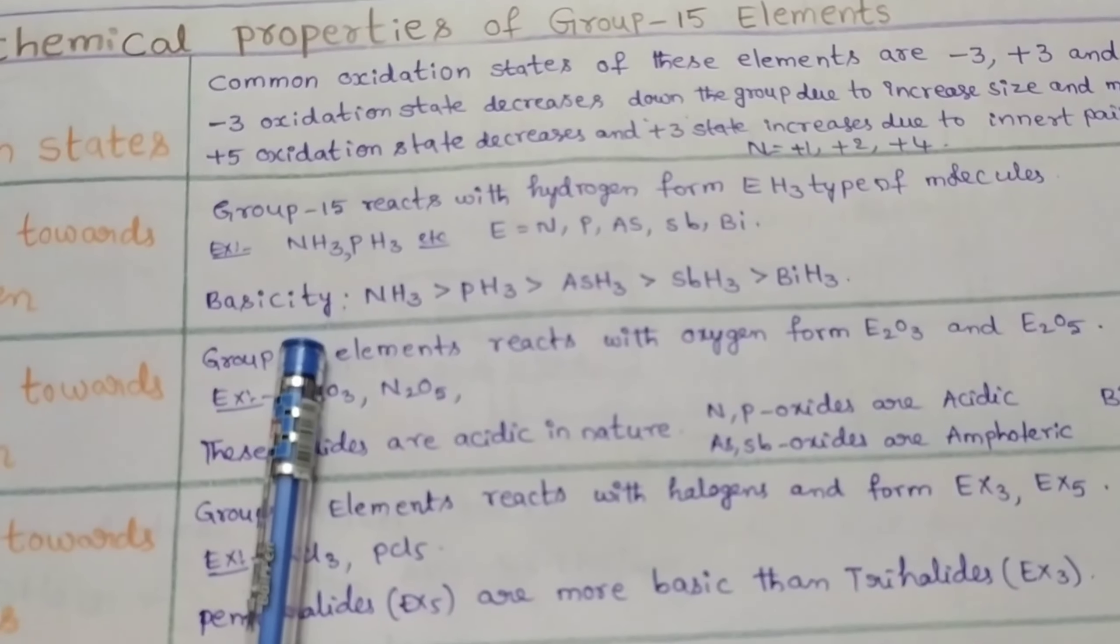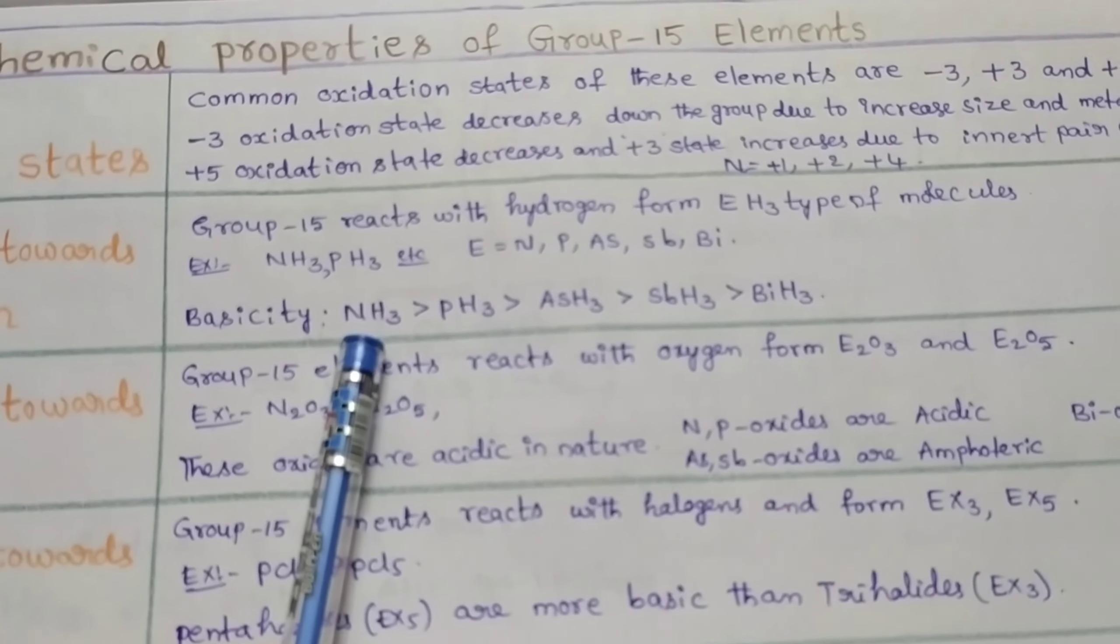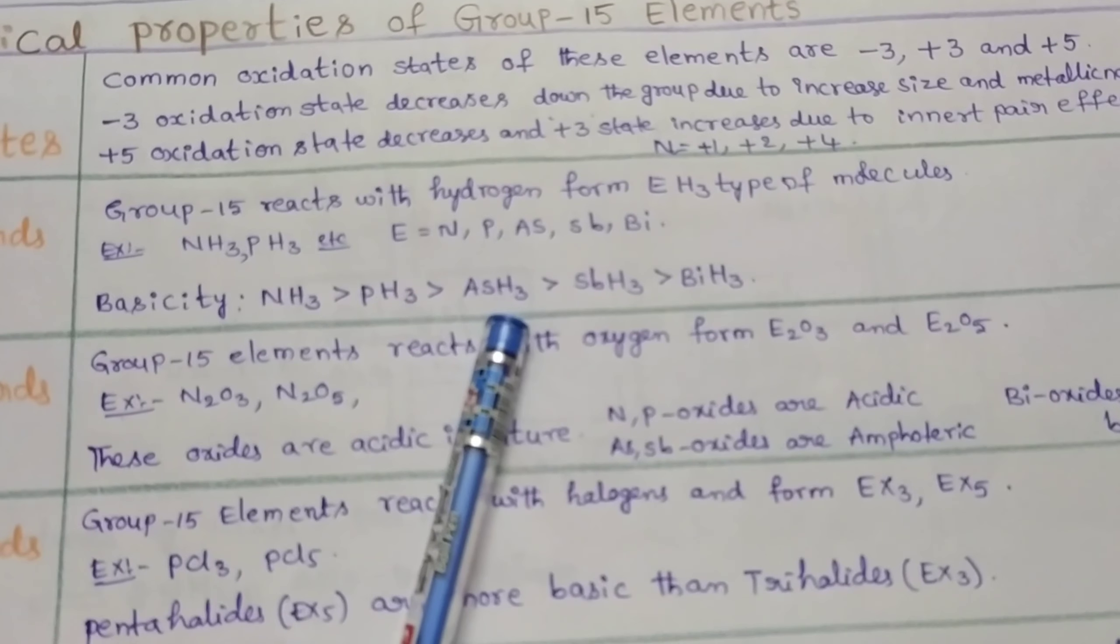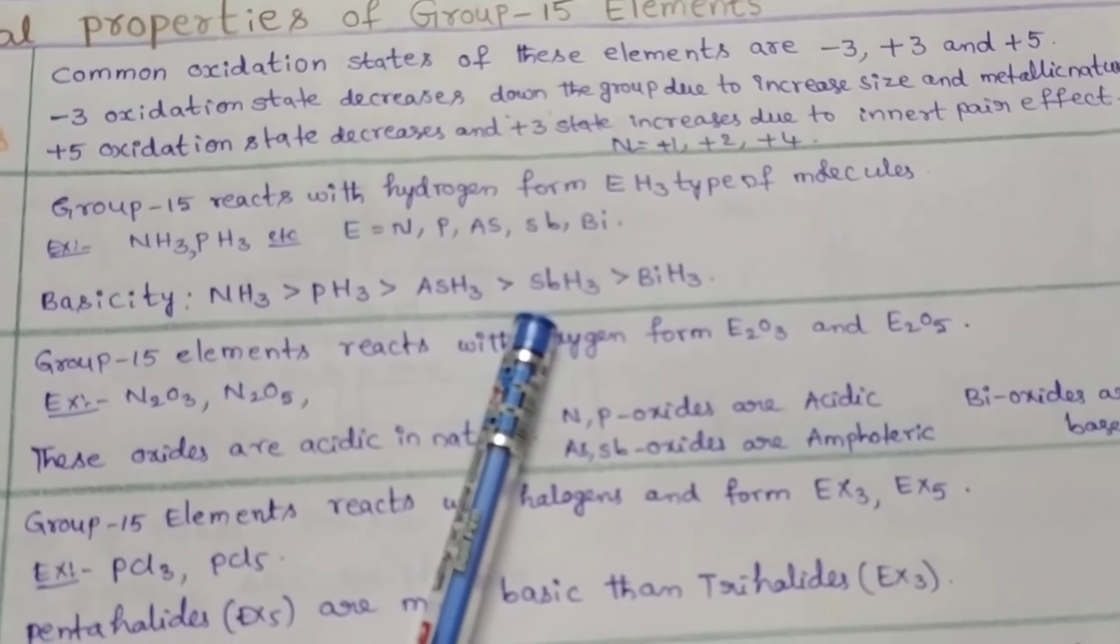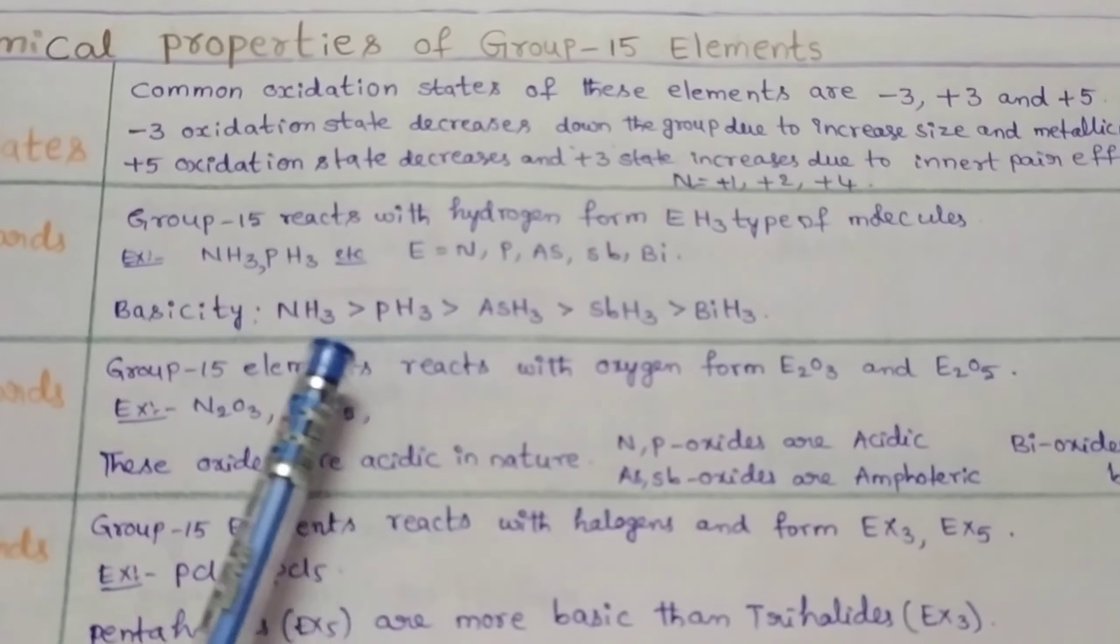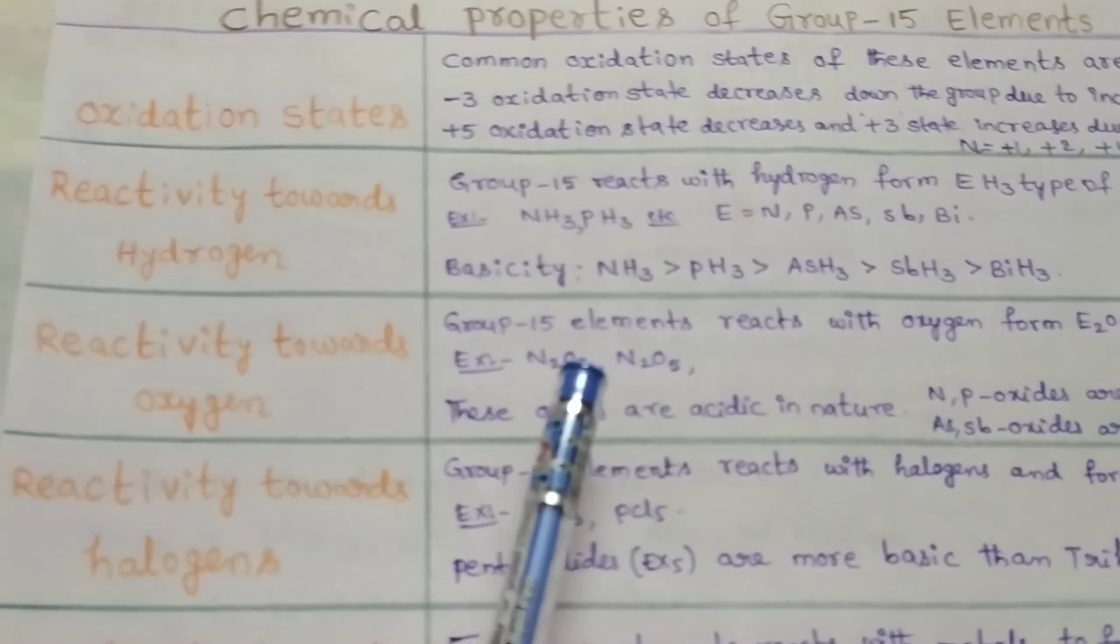The basic character of these hydrides is as follows: NH₃ is greater than PH₃, greater than AsH₃, greater than SbH₃, greater than BiH₃. That means ammonia has more basic character than BiH₃.